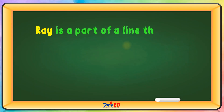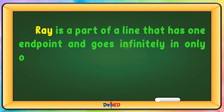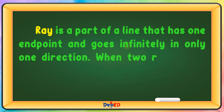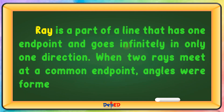A ray is a part of a line that has one endpoint and goes infinitely in only one direction. When two rays meet at a common endpoint, angles are formed.